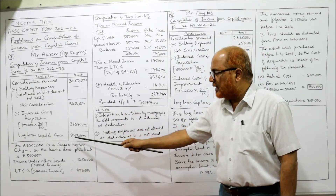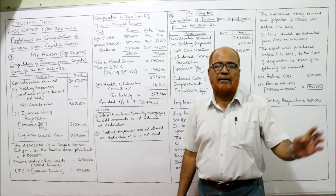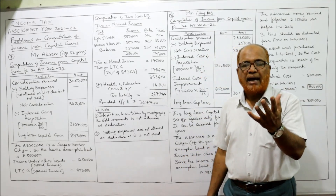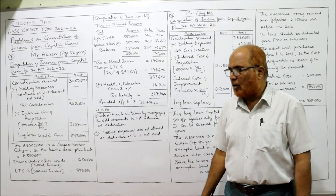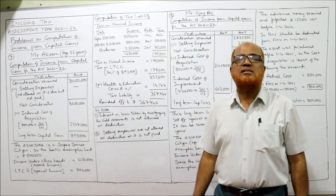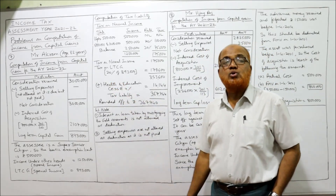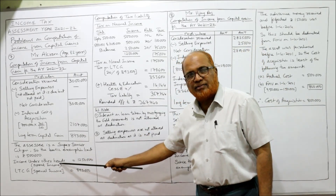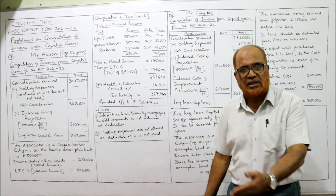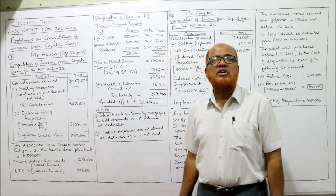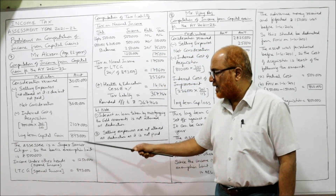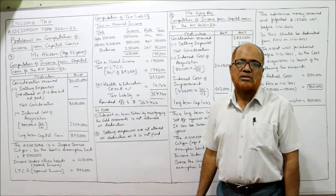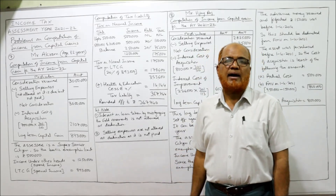Net consideration 30 lakh minus indexed cost of acquisition 21 lakh 7 thousand gives 8 lakh 93 thousand. This is a long-term capital gain because the asset was held for more than three years. Mr. Akrab is a super senior citizen, age 82 years, so the basic exemption limit is 5 lakh.